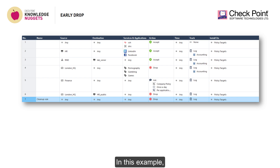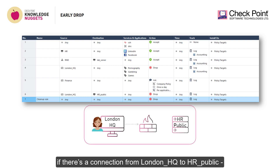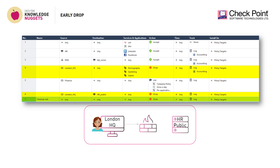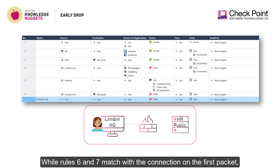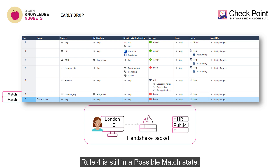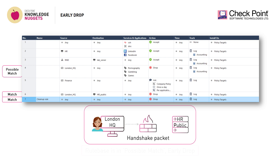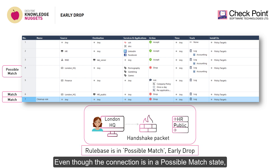In this example, if there's a connection from London HQ to HR Public, Rules 4, 6, and 7 could apply to it. While Rules 6 and 7 match the connection on the first packet, Rule 4 is still in a possible match state, as there's still not enough information at this stage to determine otherwise. Even so, this connection will be dropped on the first packet.